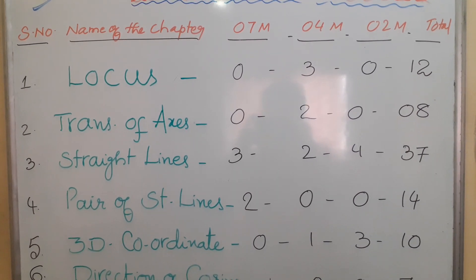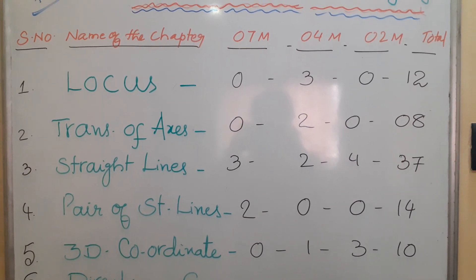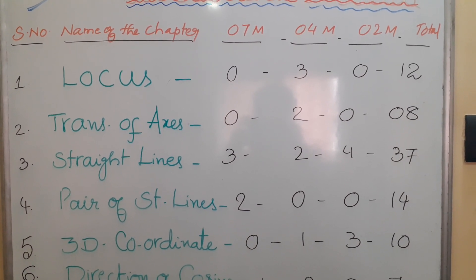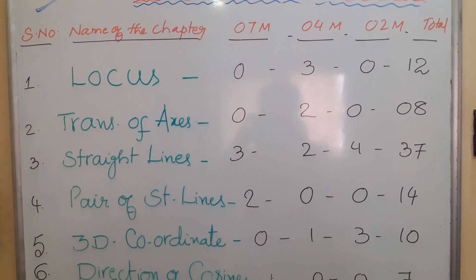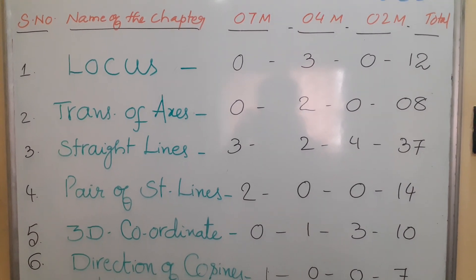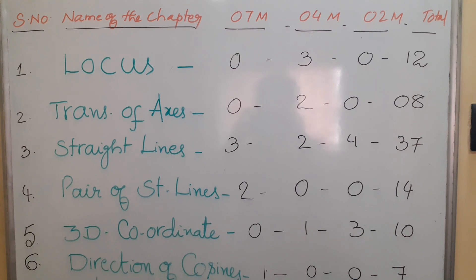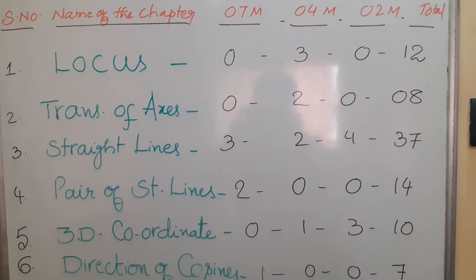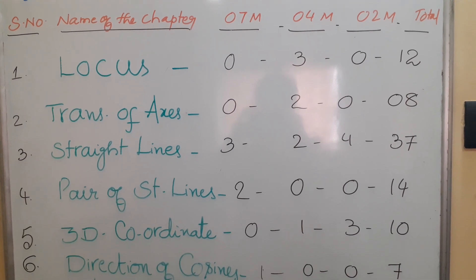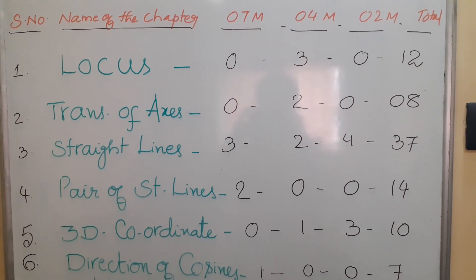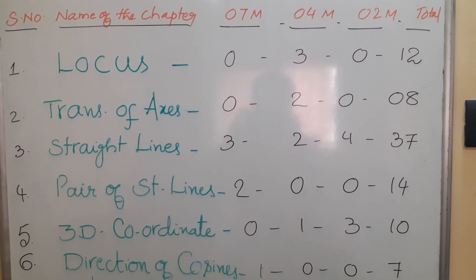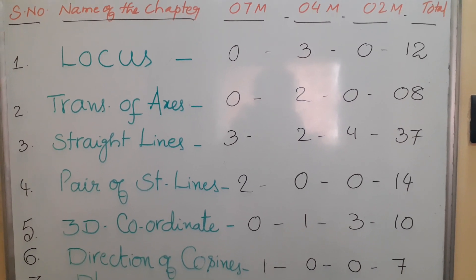Next one is Pair of Straight Lines. From this, 7-mark questions: 2; no 4-mark, no 2-mark. So 7 twos are 14 marks — weightage given to Pair of Straight Lines is 14 marks. Next one is 3D Coordinate Geometry. From this, no 7-mark question; 4-mark questions: 1; 2-mark questions: 3. So 3 twos are 6, plus 4 is 10 marks — 10 marks weightage for 3D Coordinate Geometry.